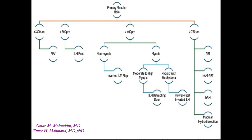A recent algorithm described by Dr. Tamir and Dr. Omar outlines different techniques for management of primary macular holes. If the macular hole is less than 300 microns, pars plana vitrectomy alone is sufficient. If between 300 and 400 microns, total ILM peeling is sufficient. If between 400 and 750 microns, consider the patient's refraction: if non-myopic, the inverted ILM flap technique is appropriate; if myopic, either ILM retracting door or flower petal inverted ILM technique is used according to the degree of myopia.